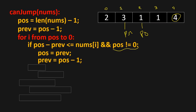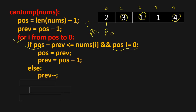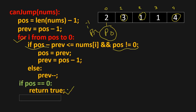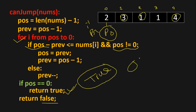Again, 2 minus 1 is less than or equal to 1 — move left. Then 1 minus 0 is less than or equal to 3 — move left. Now position points to index 0 and prev points to minus 1, so we're done with the loop. If the condition is false, we move only the prev pointer left. At the end, if position equals zero we return true; otherwise we return false. In this case it returns true. This solution has O(n) time complexity since we iterate through the array only once.